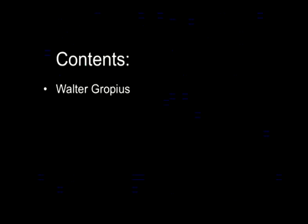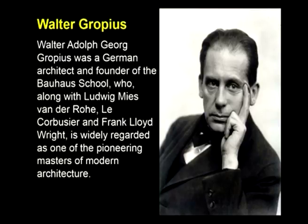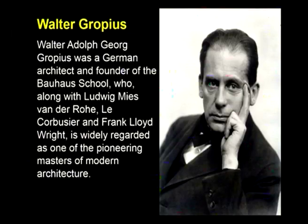Today we will be looking at the person who started Bauhaus and developed modern architecture by creating that school of architecture — none other than Walter Gropius. Walter Gropius was a German architect and the founder of the Bauhaus school. Along with Mies van der Rohe, Le Corbusier, and Frank Lloyd Wright, he is widely recognized as one of the pioneering masters of modern architecture. If you count the top five architects of all time in the world, Gropius is for sure to make that list.